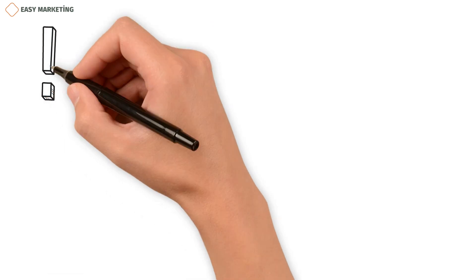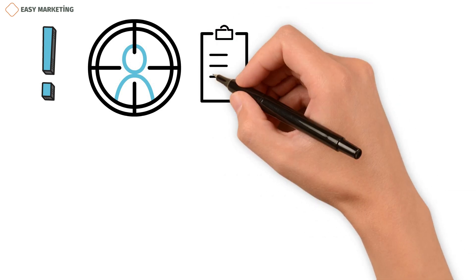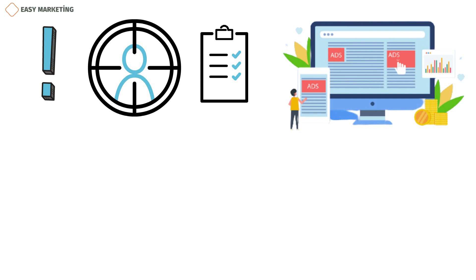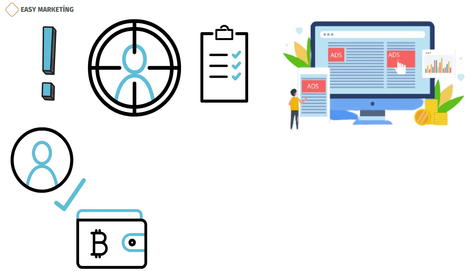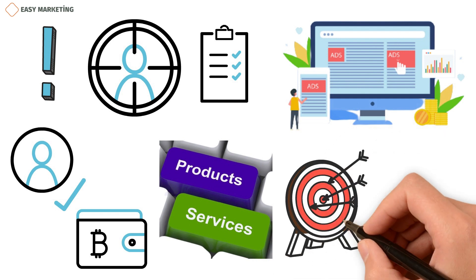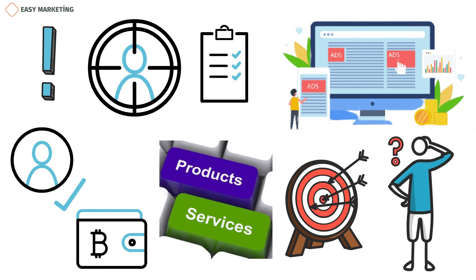One of the most important things about display advertising is that it can target specific parts of the audience that meet certain criteria based on what the advertiser wants. Display advertising's targeting feature makes sure that your ad is seen by the right people and that your advertising budget isn't wasted on people who aren't interested in your products or services. There are a lot of targeting options for display ads, so before making a choice, you should be sure what kind of demographic you want to reach.